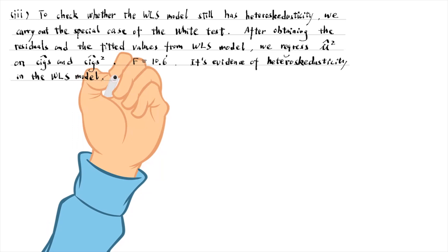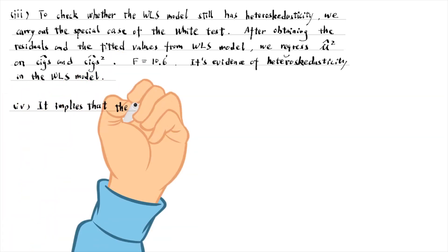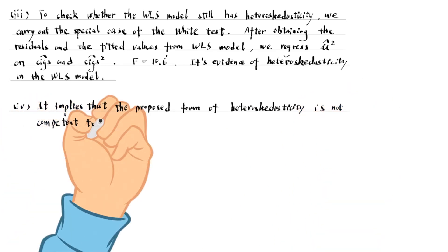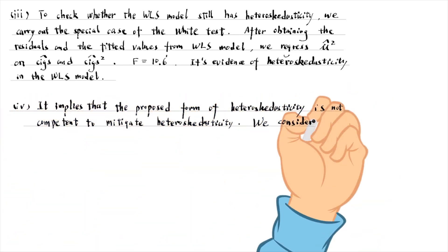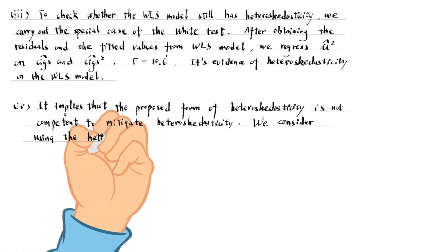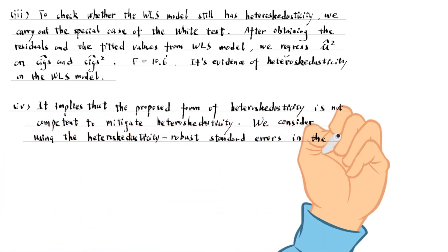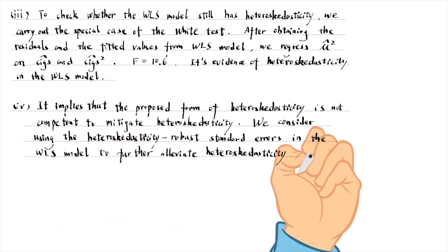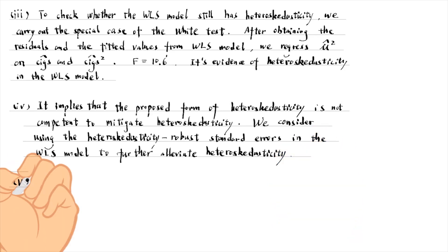It implies that the proposed form of heteroscedasticity is not competent to mitigate heteroscedasticity. We consider using the robust standard errors in the weighted least squares model to further alleviate heteroscedasticity. The estimated equation is as follows.